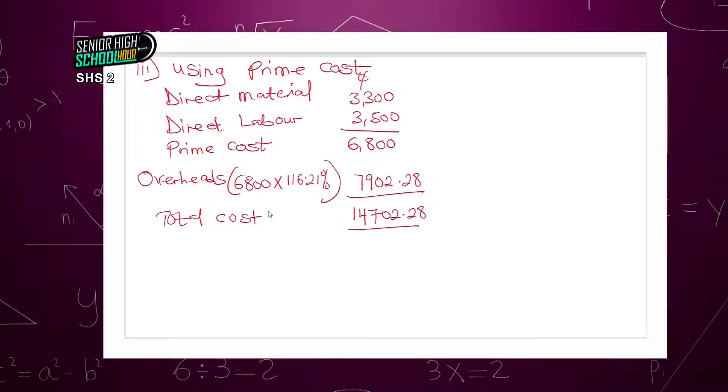There are three more absorption rates to use to calculate the unit cost — I'm sure you can do those. I'll leave them for you to try in your jotters. Before I end the overhead section, we have looked at what overhead was, the types, and the steps: collection, classification, apportionment, and finally absorption. Absorption was the last step under overheads. I hope you have been able to follow through and can calculate and charge overhead costs to a product.